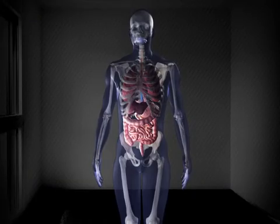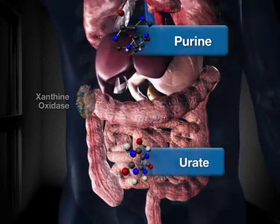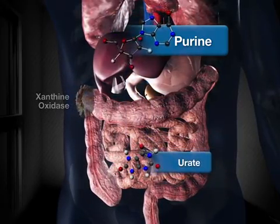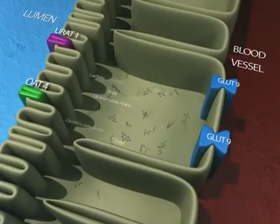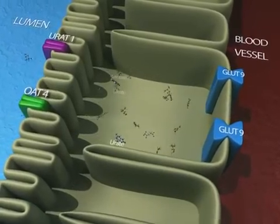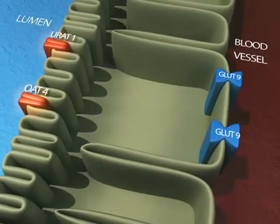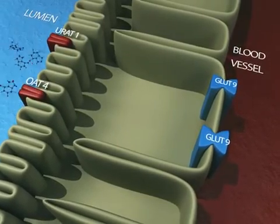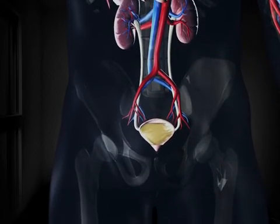Among the urate-lowering medications, the most commonly prescribed agents are xanthine oxidase inhibitors, such as allopurinol and febuxostat, which interfere with urate synthesis in the liver. Other approaches, the so-called uricosuric agents, seek to enhance renal excretion of uric acid primarily by inhibiting URAT1, interfering with urate reuptake in the proximal tubule and therefore increasing urate excretion in the urine.